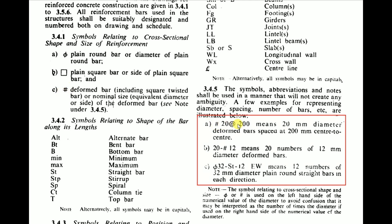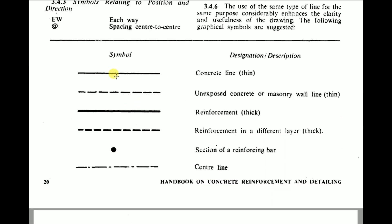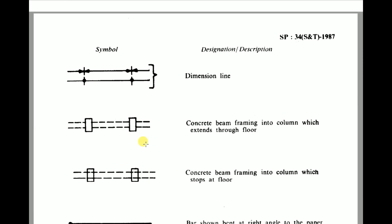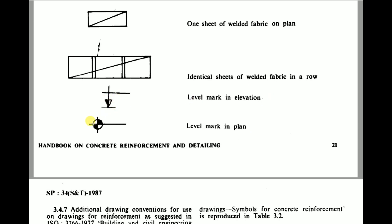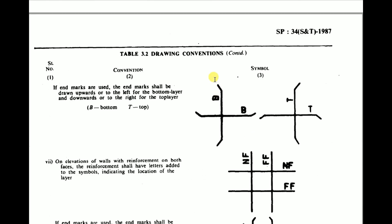Symbols, abbreviations, and notes shall be used in a manner that will not create any ambiguity. The reinforcement bars need to be represented in a standard manner in the drawing — for example, the deformed bar symbol followed by the diameter means a 20 mm dia deformed bar spaced at 200 mm center to center, or 20 numbers of 12 mm dia bars. Lines also follow conventions: a thin line is a concrete line, a dashed line is an unexposed concrete or masonry wall. Reinforcement is shown as a thicker line, a thick dashed line indicates reinforcement in different layers, a circle indicates a section of a reinforcing bar, and a center line is shown in its standard form.